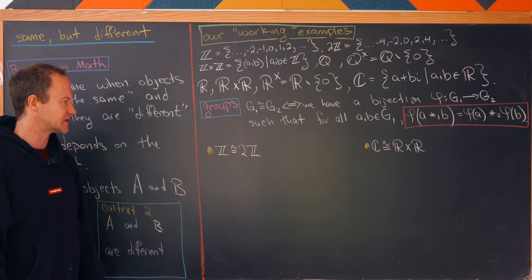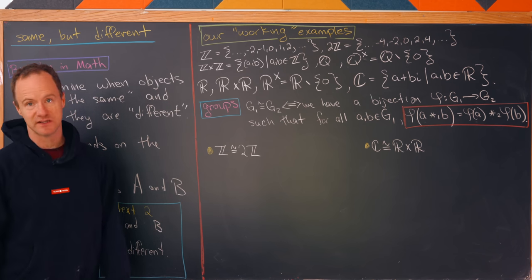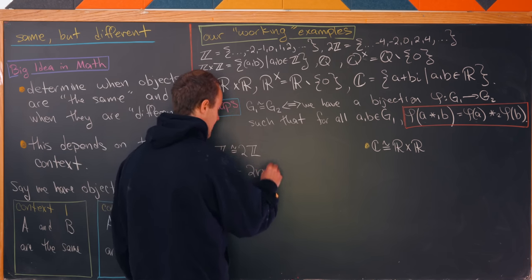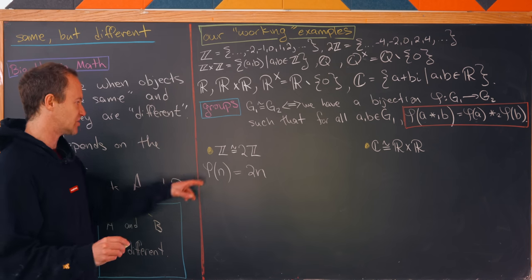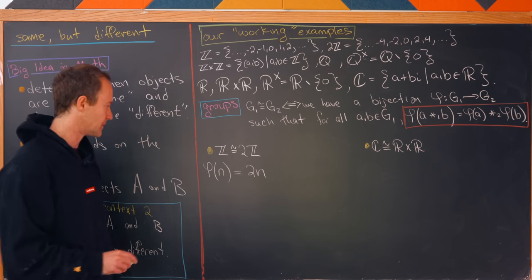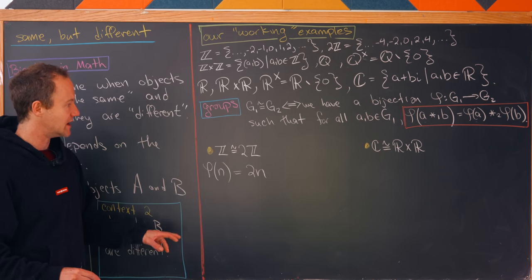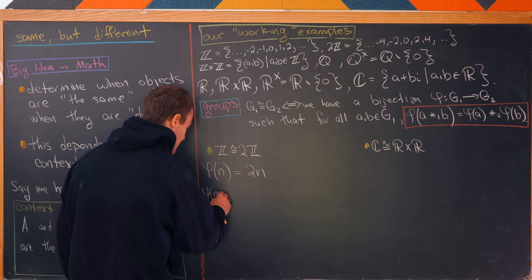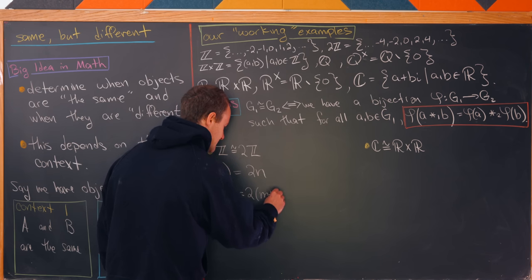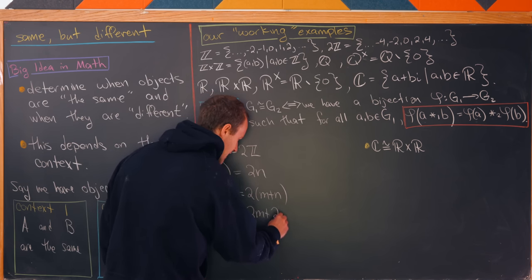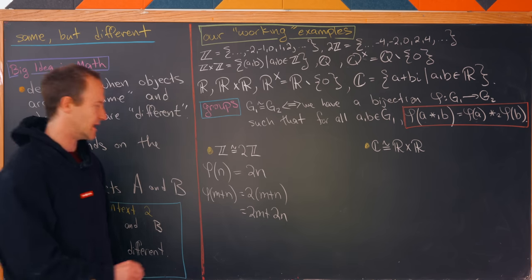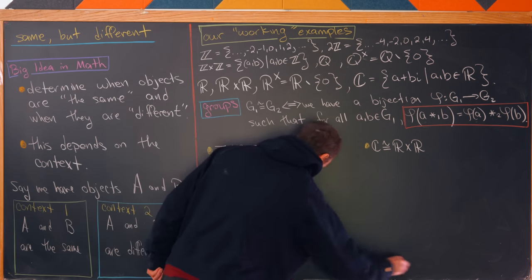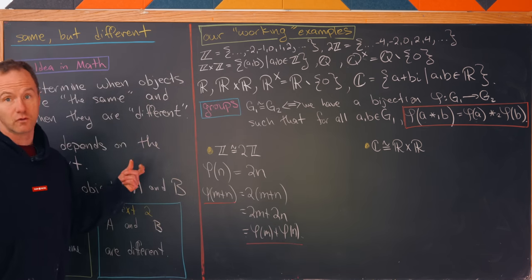Let's start with two examples of isomorphic groups. First, Z and 2Z: we have a clear bijection φ(n) = 2n. Let's check it satisfies the rule, keeping in mind the operation on both sides is addition. φ(m + n) = 2(m + n) = 2m + 2n = φ(m) + φ(n). That's exactly what we needed to show, so the operation is respected.